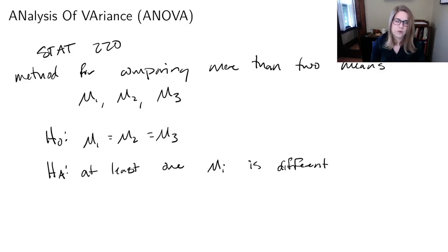And then that was all you could conclude. At the end of ANOVA you have evidence to suggest that at least one of the means is different. We don't know which one. And we're going to go deeper with ANOVA in this class.